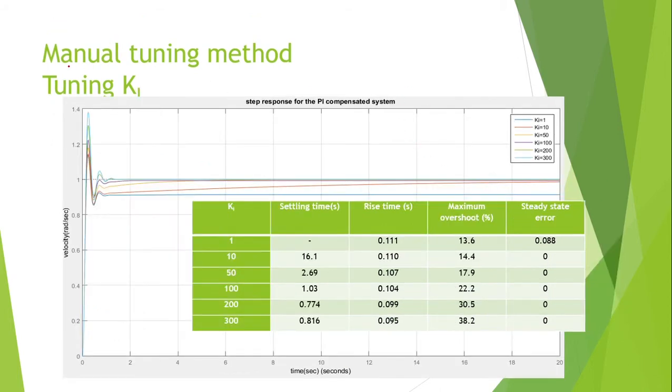Next, we tune the Ki to improve the steady state error. You can notice that the most optimal value of Ki is 200 because it gives shorter settling time and rise time, and lower overshoot compared to 300.